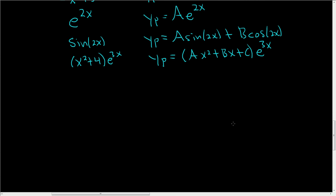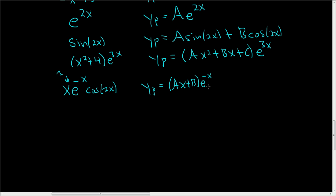What if you had something ridiculous like x·e^(−x)·cos(2x)? This is a degree-1 polynomial, an exponential, and a trig function. Because we have a trig function, we need both sine and cosine. So y_p = (Ax + B)·e^(−x)·sin(2x) + (Cx + D)·e^(−x)·cos(2x). I wouldn't want to differentiate that — that's nuts.